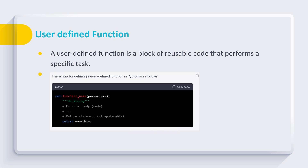In order to define a user-defined function in Python, we have a syntax which looks like this. It starts with 'def', which refers to 'define', then we give a function name. We can also pass parameters to these functions — this is optional — and if we wish to pass parameters, we specify them in brackets.